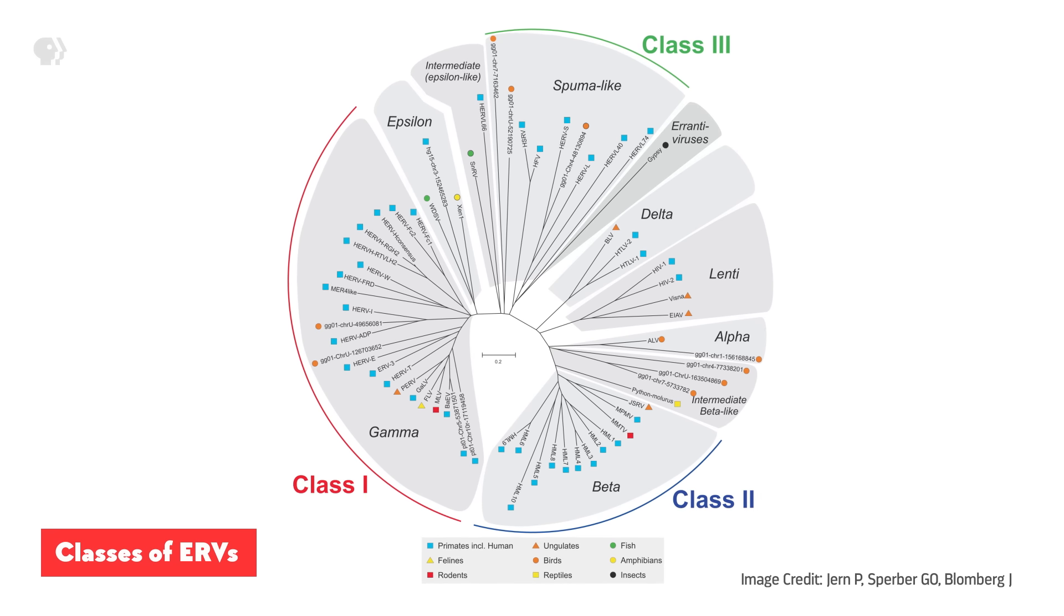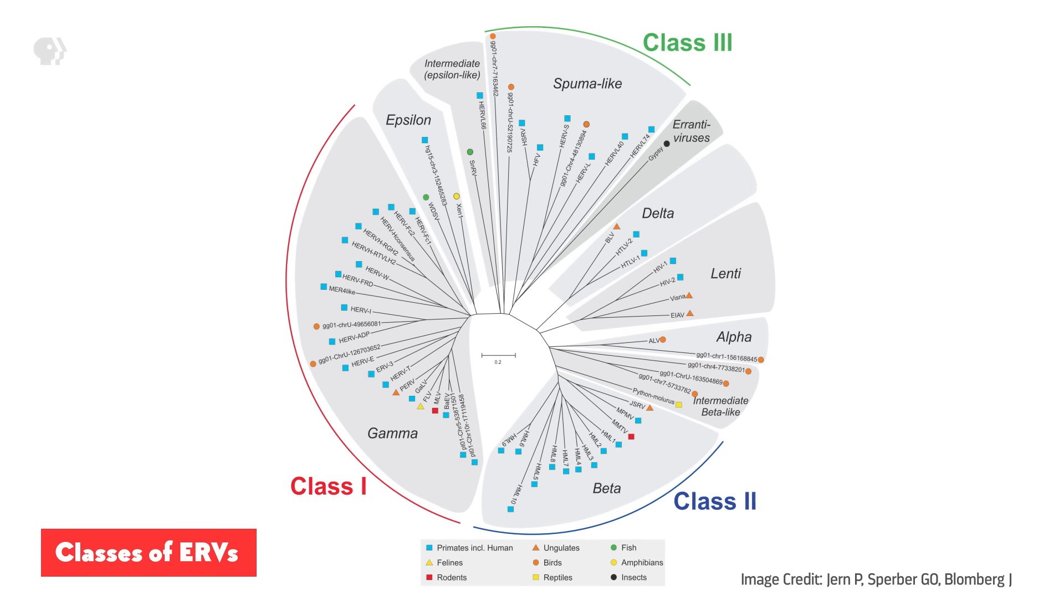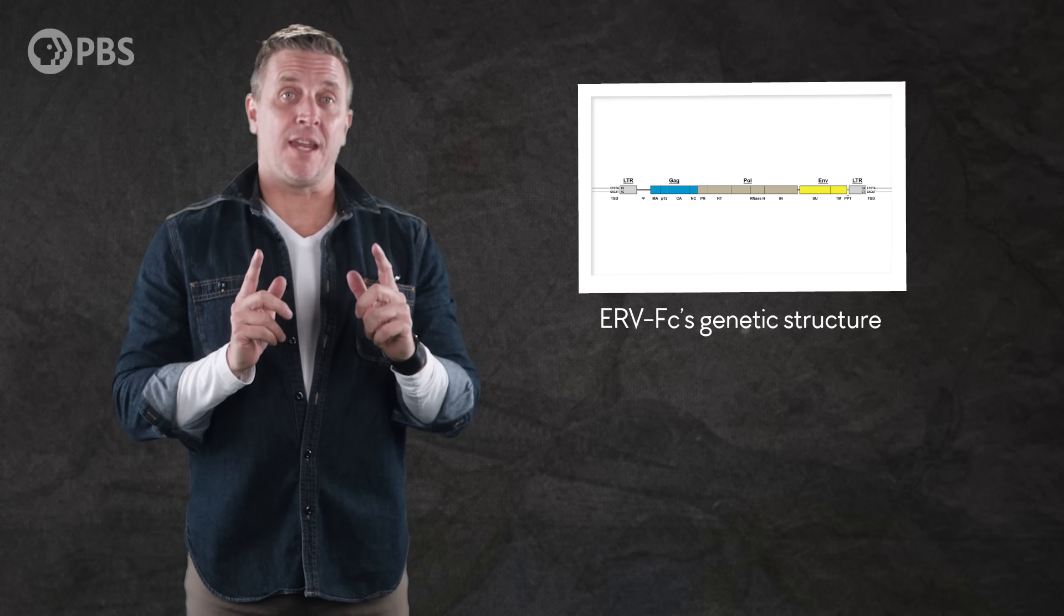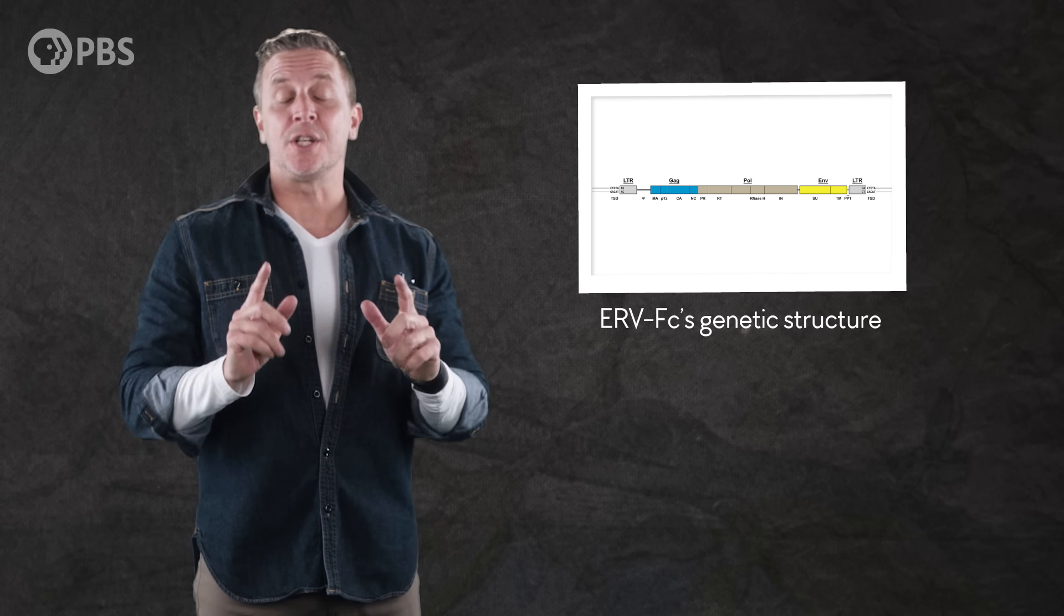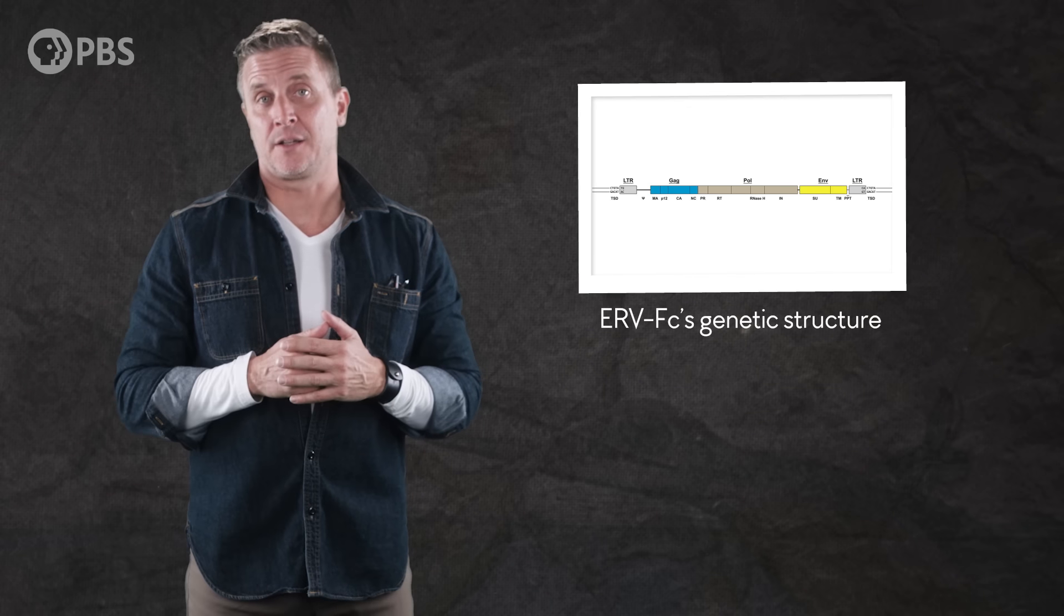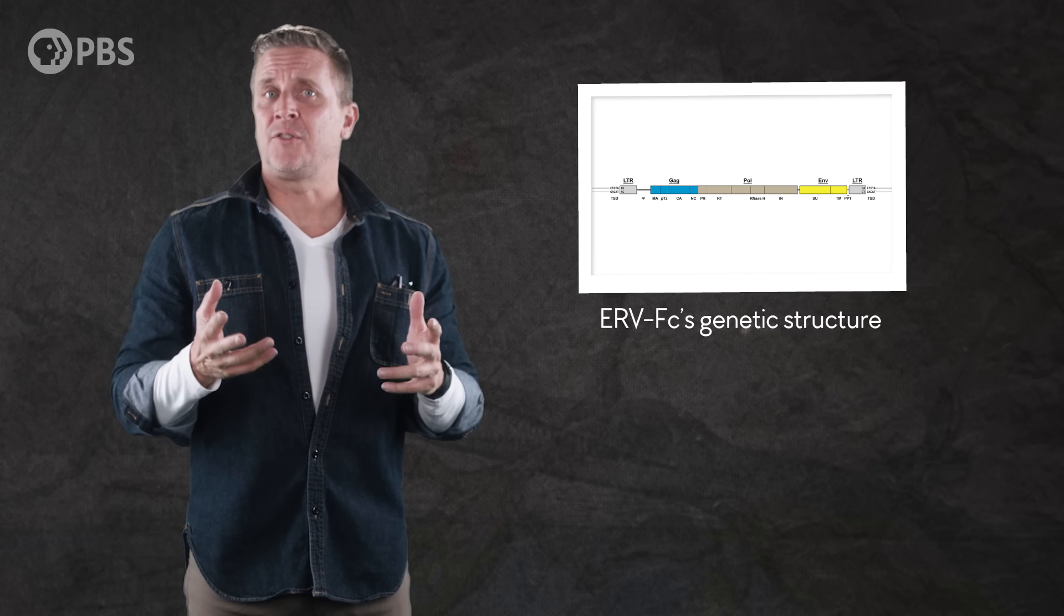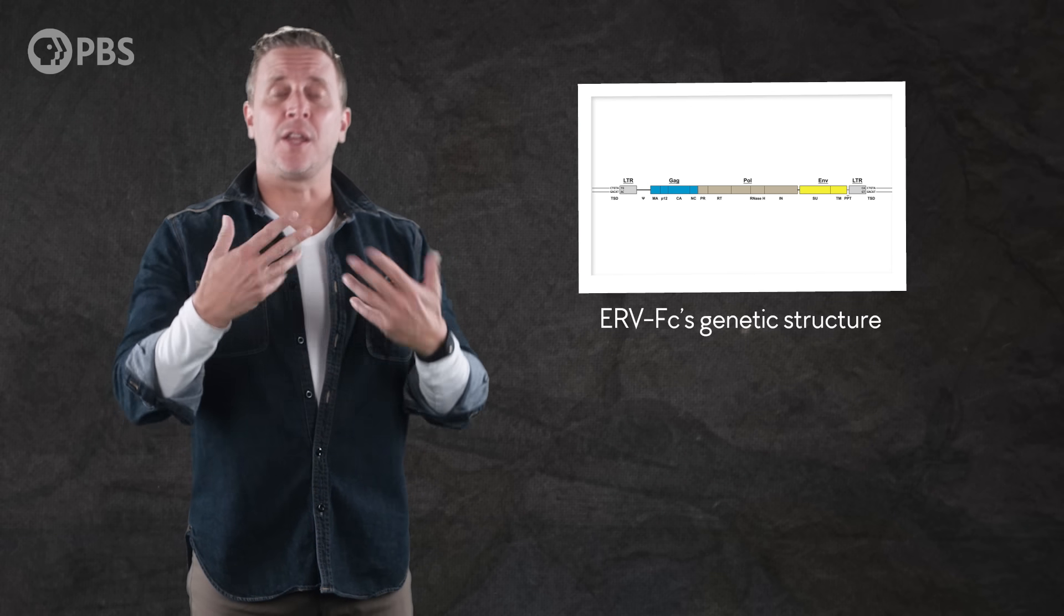Now figuring out where each bit of that viral DNA came from isn't easy. Many of these sequences have built up so many mutations and have been shuffled around so much that they're really fragmented and hard to make sense of. But in the case of ERV-FC, that sequence tells the story of an ancient, global, multi-species pandemic. Or maybe more accurately, a series of epidemics played out over a huge span of time.